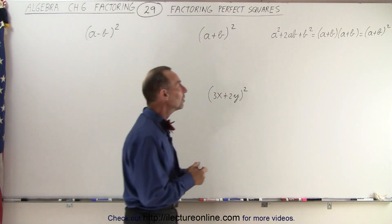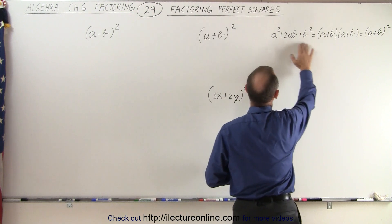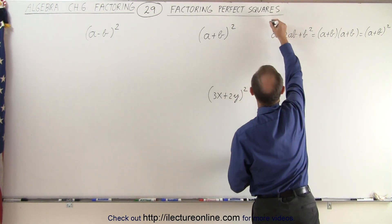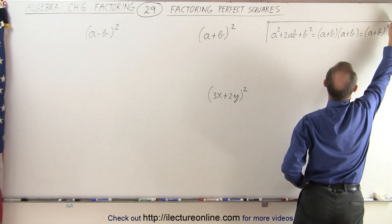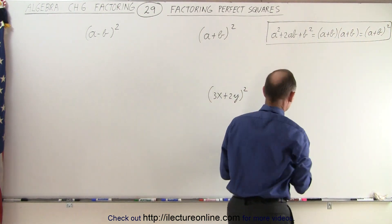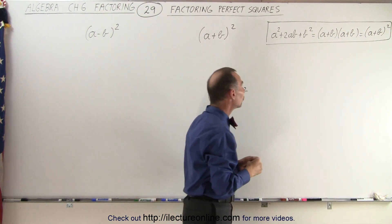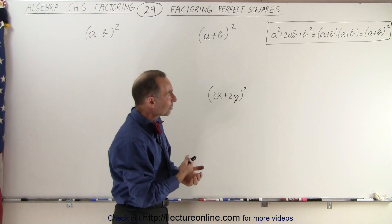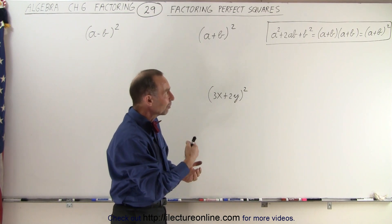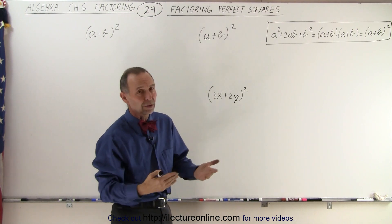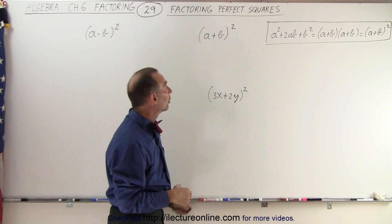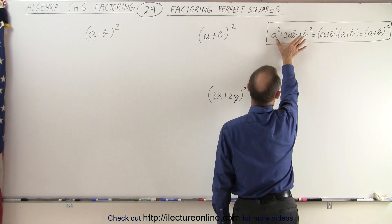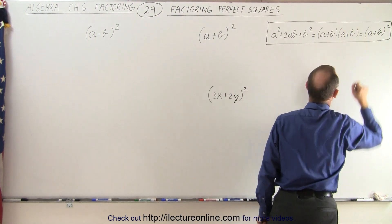If you have something in this format, it can be factored into this format. When we take a look at what we have on the left inside this box, we have a squared plus 2ab plus b squared. That can be factored to be a plus b times a plus b, which can be written as a plus b squared. So this is what we call a perfect square.